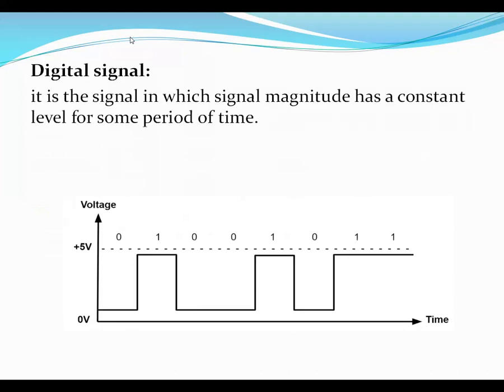The next signal is digital signal. It is a signal in which the signal magnitude has a constant level for some period of time. Means in such a type of signal, the signal magnitude does not vary with respect to time. Such a type of signal is called a digital signal. From this diagram we can come to know about what is digital signal.